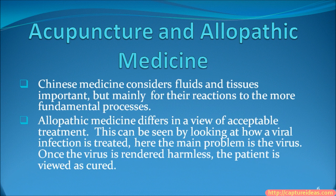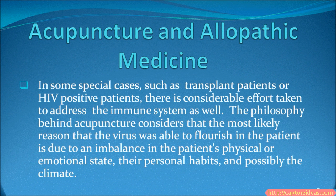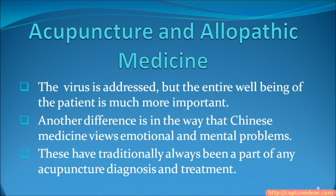Allopathic medicine differs in its view of acceptable treatment. This can be seen by looking at how a viral infection is treated. Here, the main problem is the virus. Once the virus is rendered harmless, the patient is viewed as cured. In some special cases, such as transplant patients or HIV-positive patients, there is considerable effort taken to address the immune system as well. The philosophy behind acupuncture considers that the most likely reason the virus was able to flourish in the patient is due to an imbalance in the patient's physical or emotional state, their personal habits, and possibly the climate. The virus is addressed, but the entire well-being of the patient is much more important.